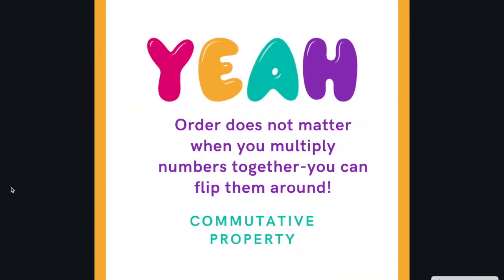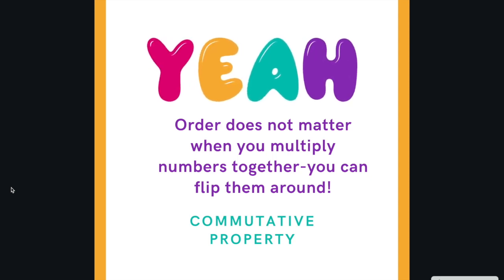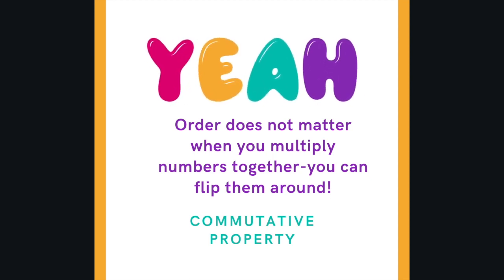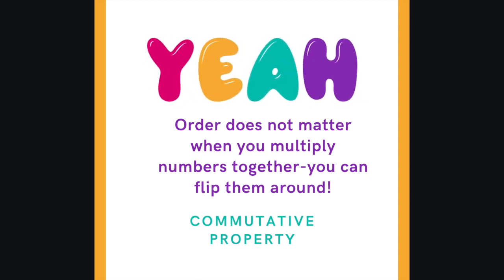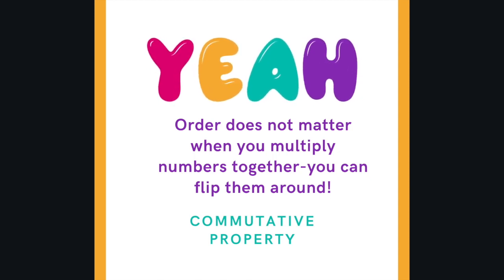So let's take a look. Order does not matter when you multiply numbers together. You can flip them around. The commutative property allows us to do this wonderful thing. You, fine people, have actually been using the commutative property for a long time because guess what? This is also the rule in addition. You know that we can add 1 plus 2 and get 3 just as well as we can add 2 and 1 together to make 3. Commutative property. It's pretty amazing.